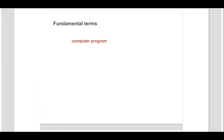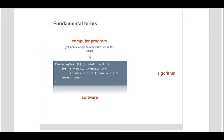Let's start with the meaning of the terms computer program, software and algorithm, used with respect to patentability of subject matter in the field of information technology. A computer program is a sequence of computational steps which may be effectively performed by a digital computer. The steps of a computer program are written in a systematic notation known as a programming language. A computer program is often termed as the code.